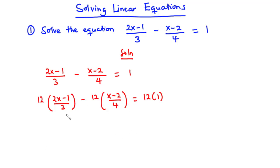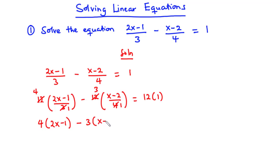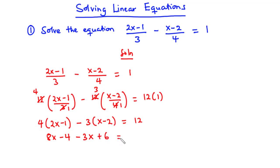Now let's simplify this expression. 3 goes into itself once and 3 goes into 12 four times. So we have 4 times (2x minus 1), minus — 4 goes into 12 three times — so we have 3 times (x minus 2), equals 12 times 1 which is 12. Simplifying further: 4 times 2x is 8x, 4 times negative 1 is negative 4, then negative 3 times x is negative 3x, and negative 3 times negative 2 is positive 6. This equals 12.